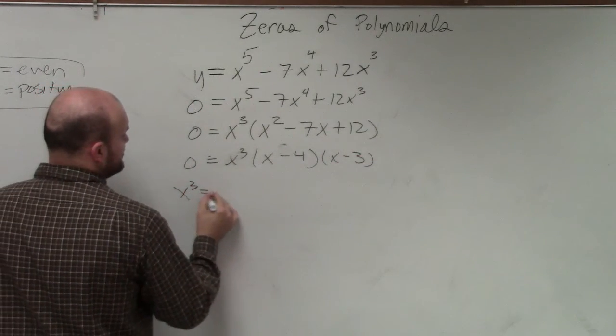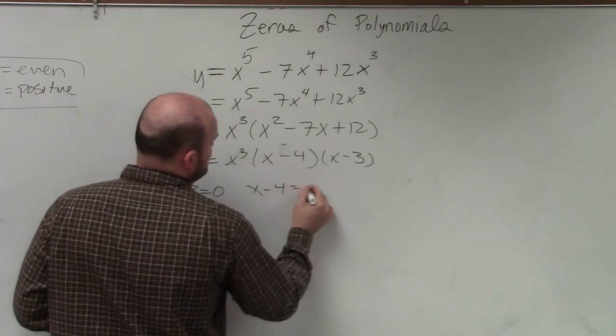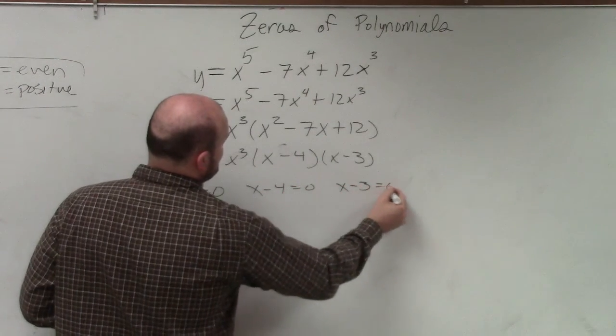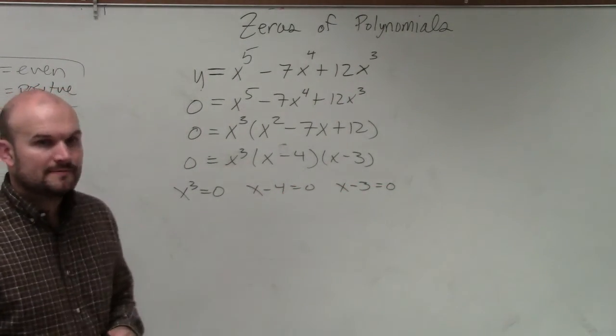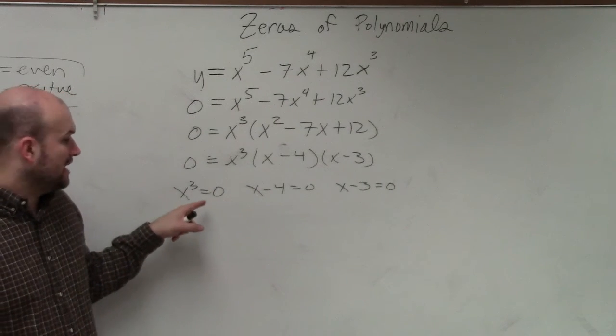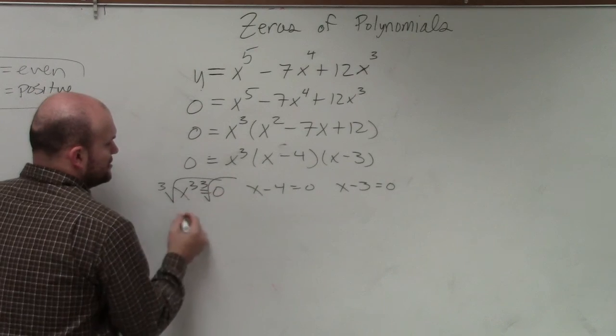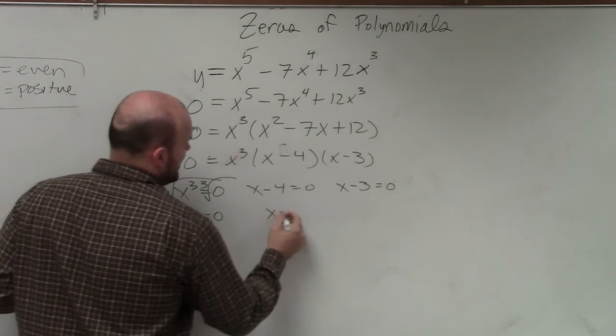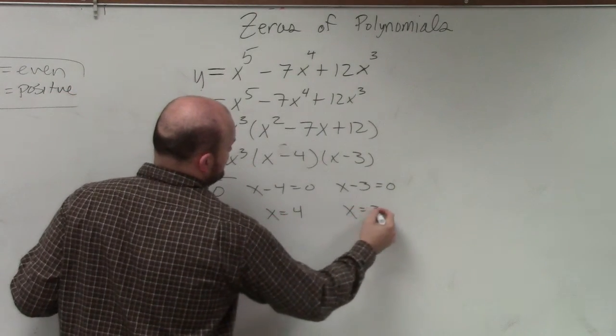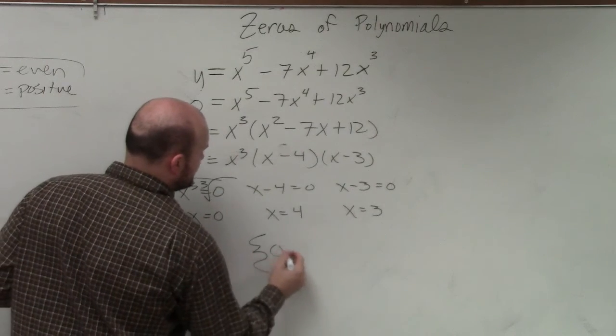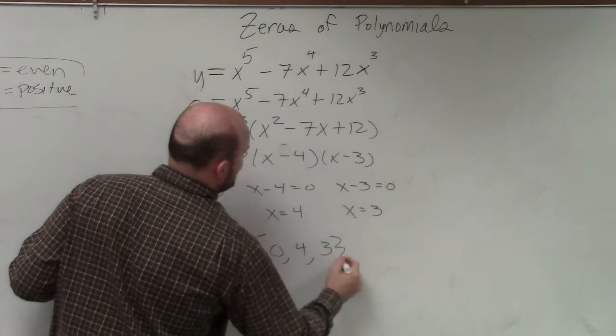Then we just know x cubed equals 0, x minus 4 equals 0, and x minus 3 equals 0. Right? Now I just go ahead and take the cube root on both sides. So I have x equals 0, x equals 4, and x equals 3. So I have the exact same solution set as my last problem.